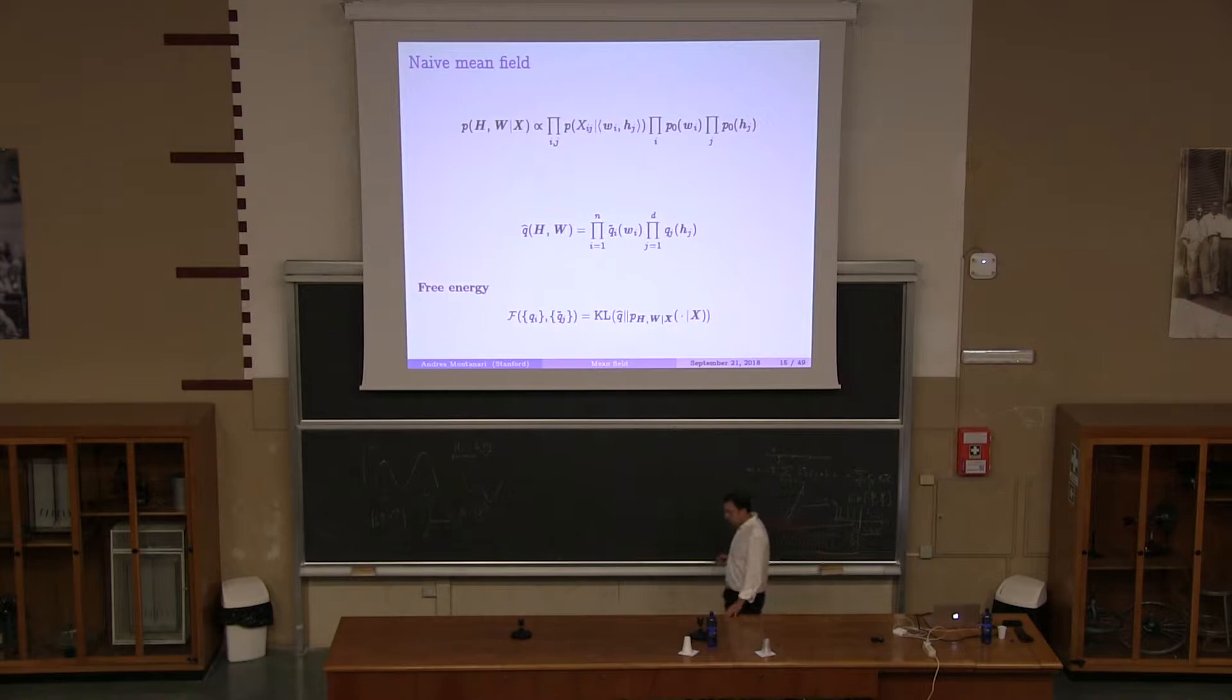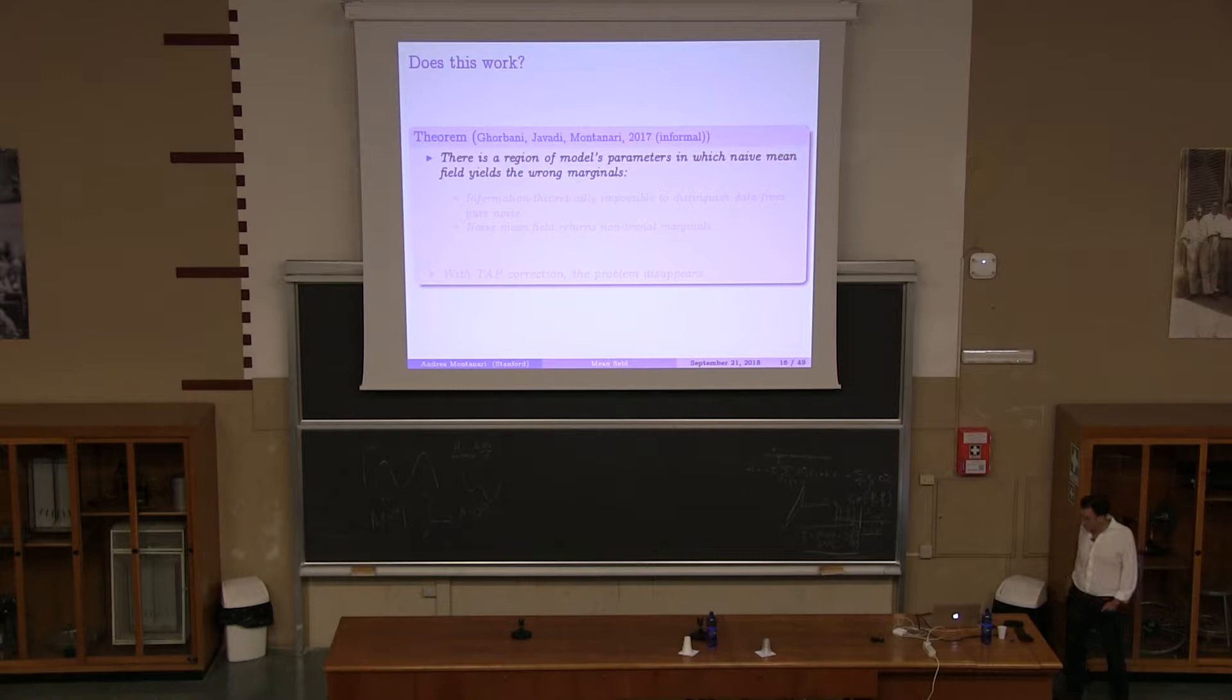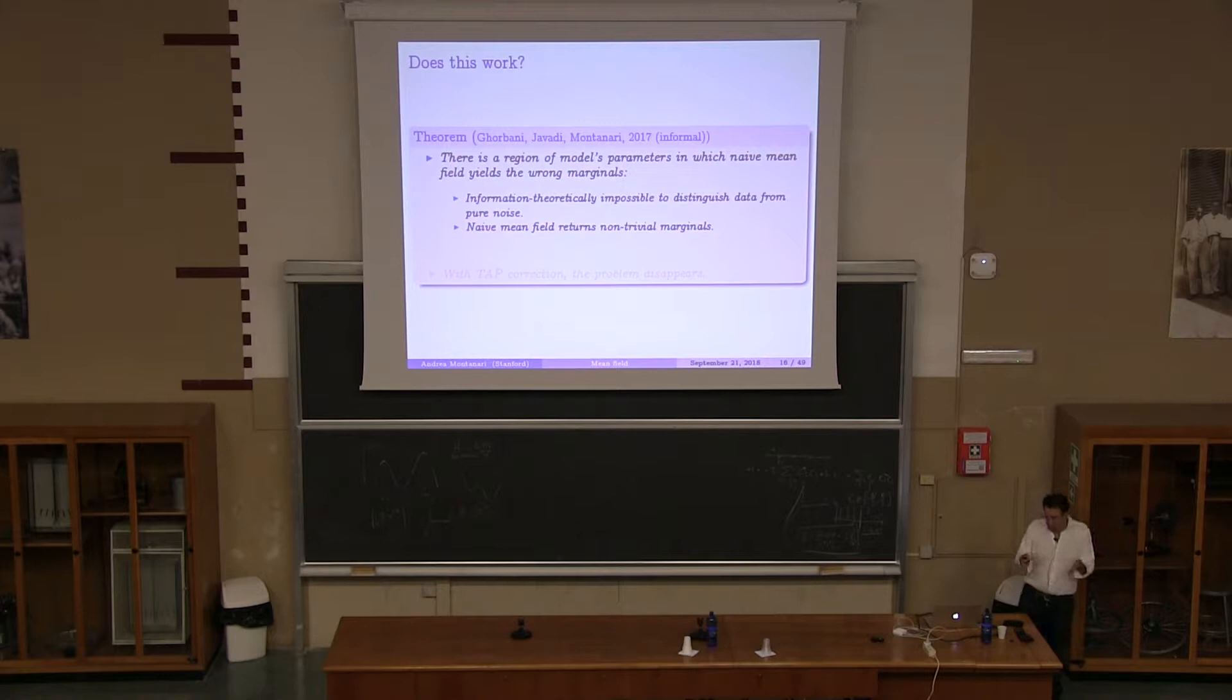Okay, so a good question. Now, this was extremely impactful, etc. Good question. Does it give you the correct answers? Okay? So this is something at which we looked recently, and other people looked at recently. Surprisingly, it took some time. And, you know, you would expect not always, being a physicist, in fact, this is what we find. We prove the following, that, you know, there is a region of these model parameters in which naive mean field gives you the wrong marginals, and gives you the wrong marginals in the following sense. So, you can construct, you know, parameters for which it's information theoretically impossible to distinguish the data from pure noise. There is no way to distinguish. Nobody can do it. No algorithm can do it. And yet, if you run naive mean field, you get some non-trivial marginals. So naive mean field is telling you there is some information in the data, but you know that there cannot be any information in the data.